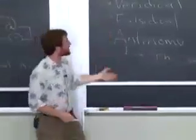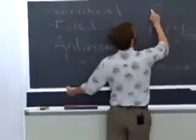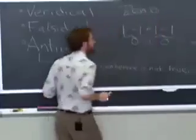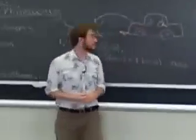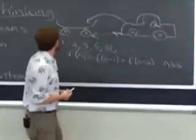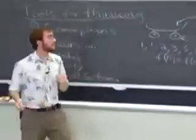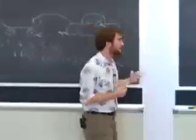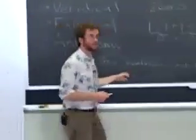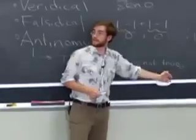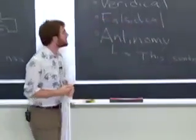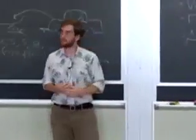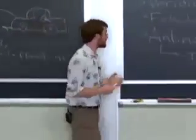The liar paradox still hounds us today. Unlike Zeno's paradox, it hasn't been solved. We still don't know how to deal with it. And when we talk about Gödel's theorem, the way he proves his result is actually going to be intimately linked with a variant on this. So, instead of saying, I'm not true, it's going to say, I'm not provable. And that's going to be a very interesting idea.